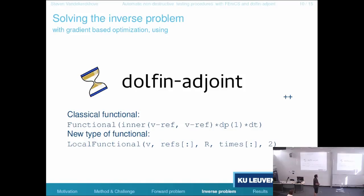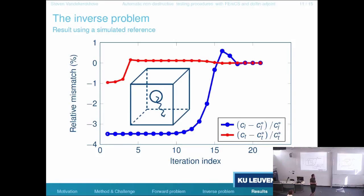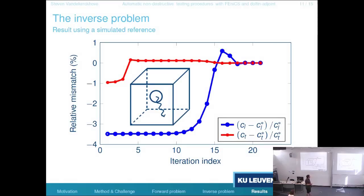I made my few adjustments to Phoenix and Dolphin-Adjoint, and that brings me to one of my results. I have this cube modeled — I showed you the picture in the beginning. There's a transducer that emits the wave, and I'm receiving a signal at the bottom. At this moment, I'm using a simulated reference: I just solved my forward problem, pretended I measured, and checked what happens. I start with a distortion of 1% for one velocity and more than 3% for the other one, and just let Dolphin-Adjoint — well, mostly the SciPy optimizer — do the work. In the end, it all comes out very nicely. I added some Gaussian noise so as not to commit an inverse crime.